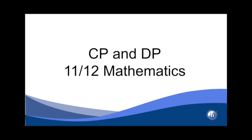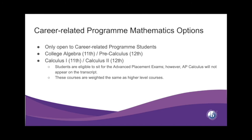This presentation will go over your mathematics options for grades 11 and 12. Starting with the career-related program math options — these options are only open to students who are taking the CP. You have two tracks: College Algebra in 11th grade and Pre-Calc in 12th grade, and Calculus 1 in 11th grade and Calculus 2 in 12th grade. While these courses follow the AP or Advanced Placement content, they are not going to be called AP, but students are able to take the AP exams. These courses are weighted and will appear on the transcript as Honors Calculus 1 and Honors Calculus 2.